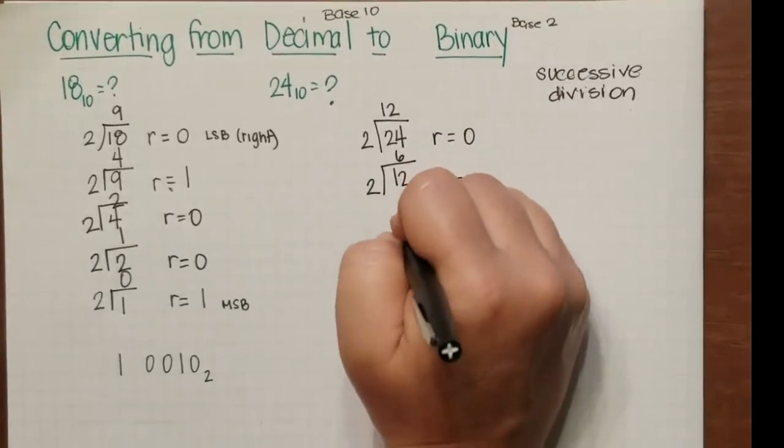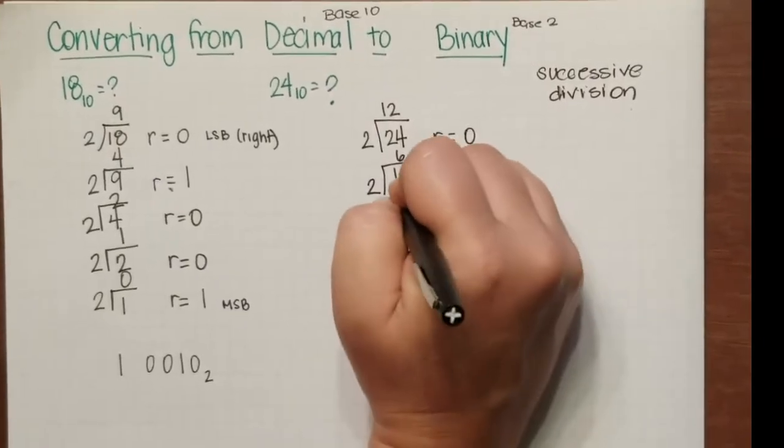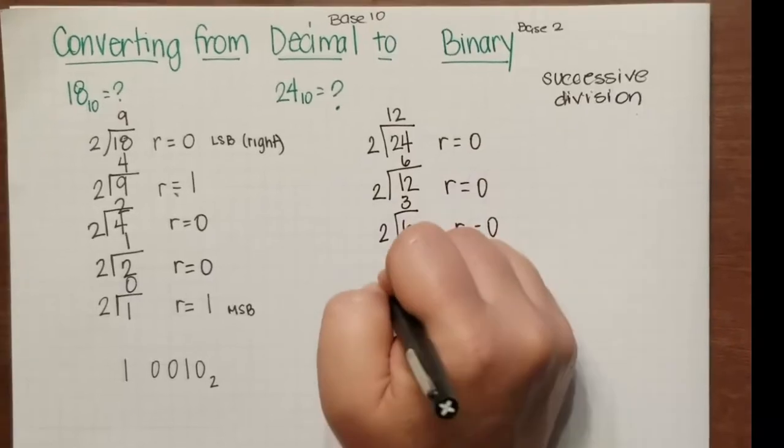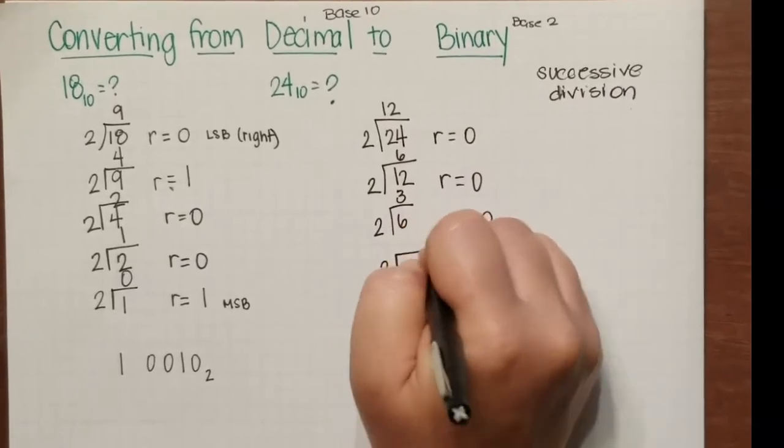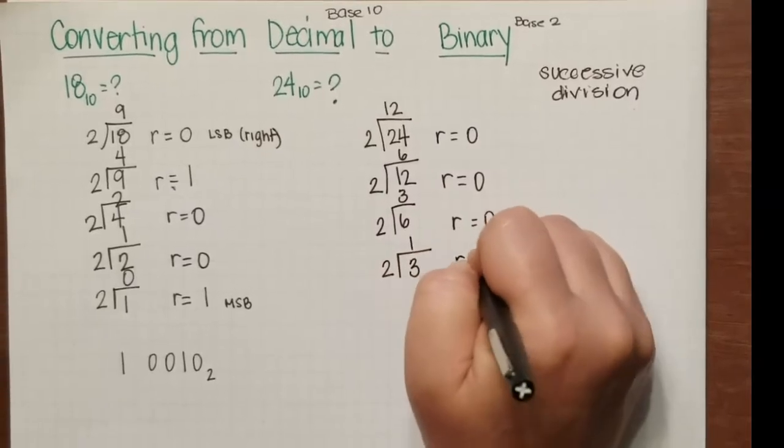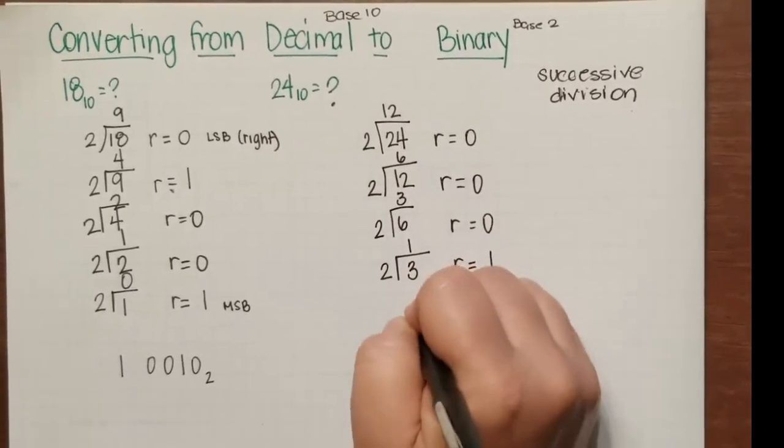Now this comes down, we divide 2 into that. It goes 6 times with the remainder of 0. Then we do 6 divided by 2, goes in 3 times with the remainder of 0. 2 divides into 3 one time with the remainder of 1.